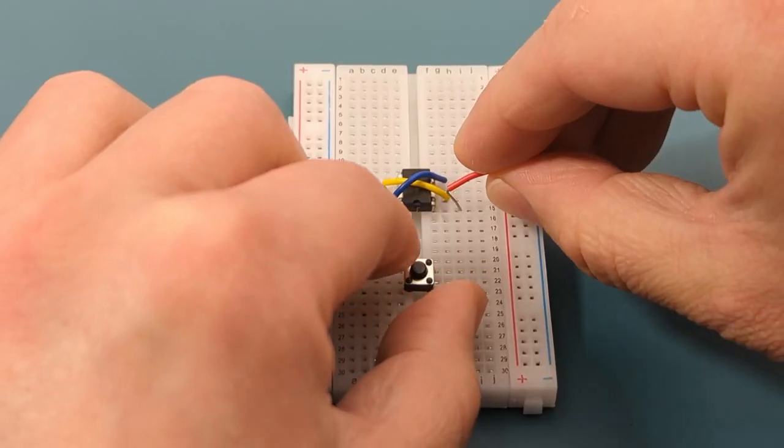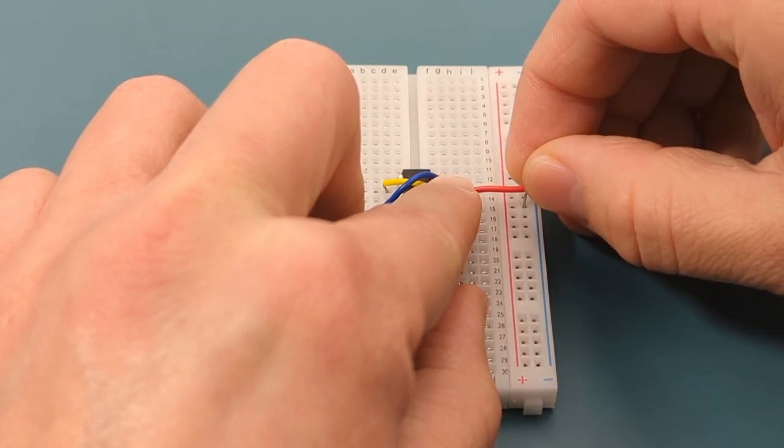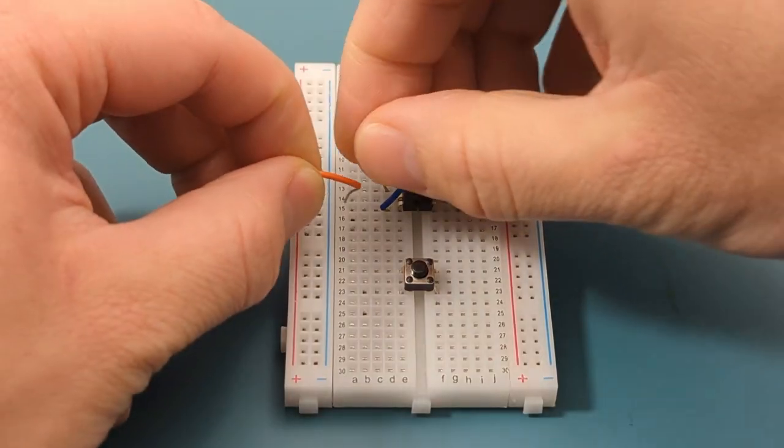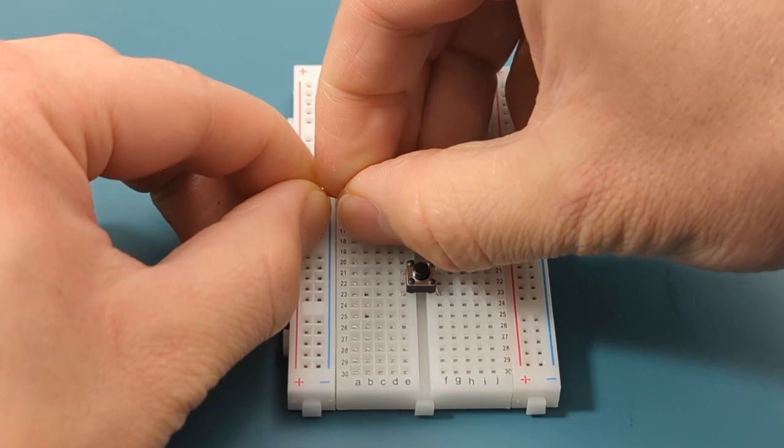A jumper wire connects pin one or ground to the negative rail. A jumper wire connects pin eight or VCC to the positive rail.